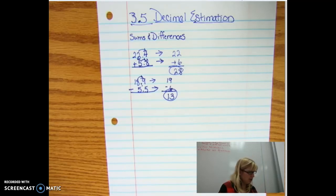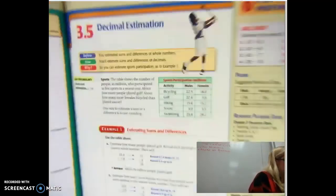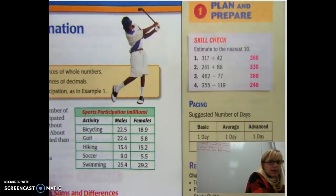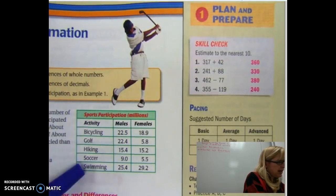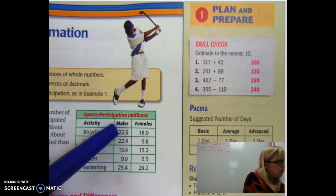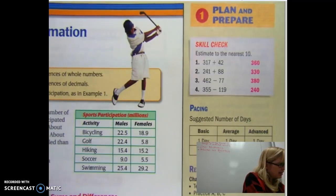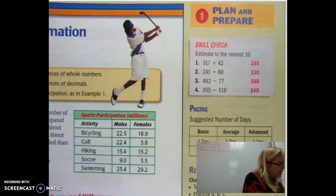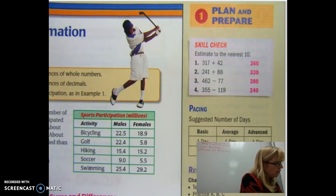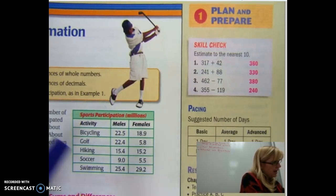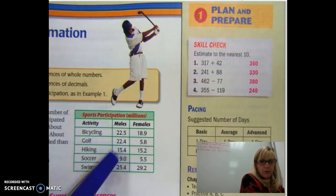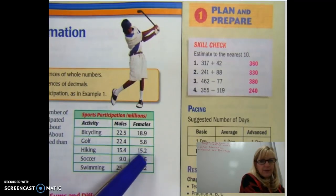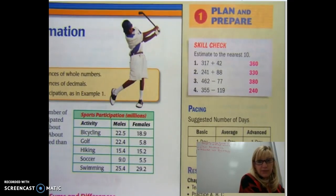There's a book example I'd want to show you. If you look up here, here's the activity, sports participation in millions. Here's the activities, and these are 22.5 million males compared to 18.9 females. So estimate the total number of people that participated in hiking. So we have 15.4 and 15.2. Take just a moment and see if you can figure out what they would round to.